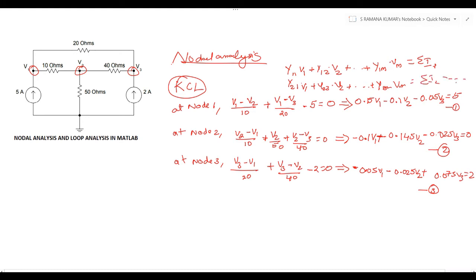The values y11, y12, y1m, y21, etc. are the elements of the admittance matrix. The simplified matrix form of these equations is written as: Y·V = I, where Y is the admittance matrix, V is the voltage vector, and I is the current vector. To find the voltage values, we will use this matrix equation.